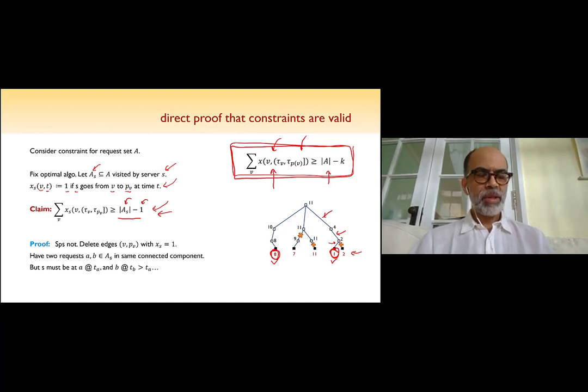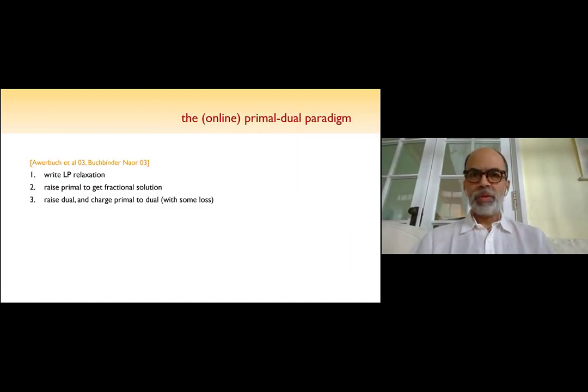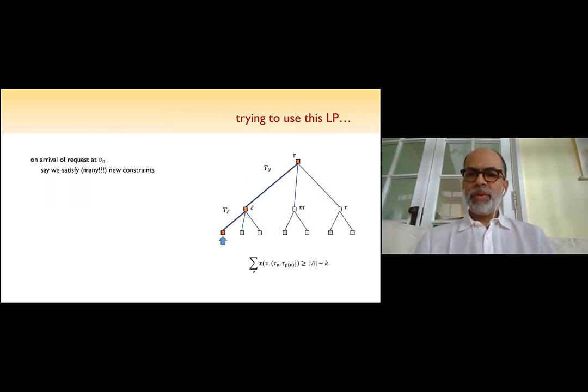Now, if this claim were true for every server S, I could sum this up and get exactly the constraint I wanted on the right-hand side. Oh, Anupam, just another quick clarification question. Sure. Like the server going from v to its parent. I mean, I guess like the server can go from anywhere to anywhere in one time step. So we just mean like it crosses the parent? Absolutely. Okay. Absolutely. Thank you. So if the server went from here to there, then all these three edges would have x's equals one. Good. So I want to show this claim only for the server S. So basically I'm looking at this tree out here and I want to say that look at all the edges where the server crossed the edge at some time in the appropriate intervals, they must be at least |A_S| minus one.